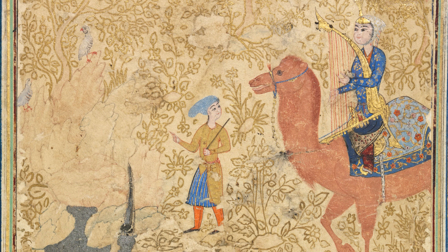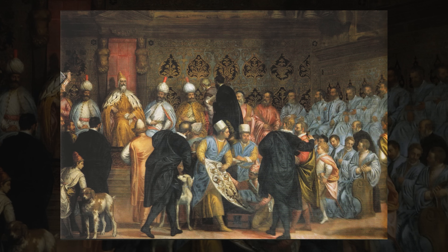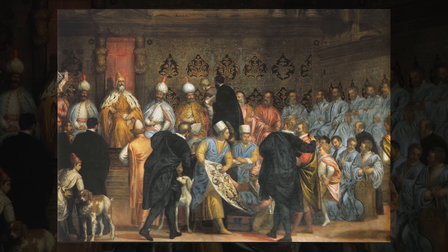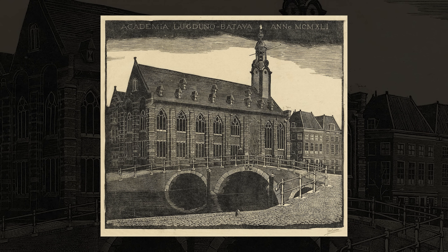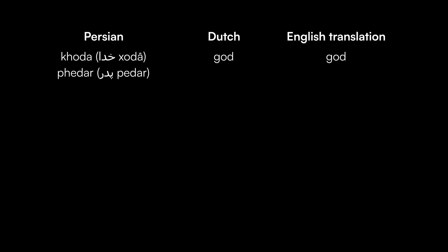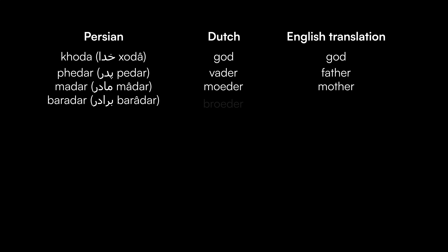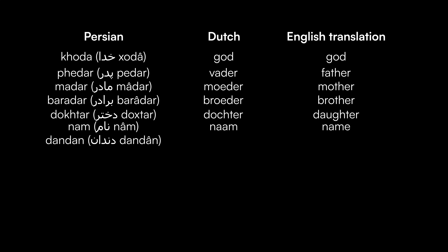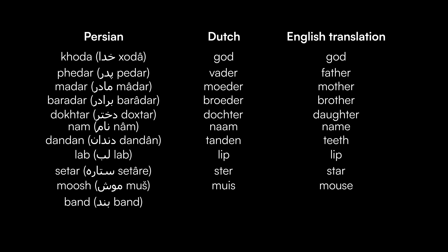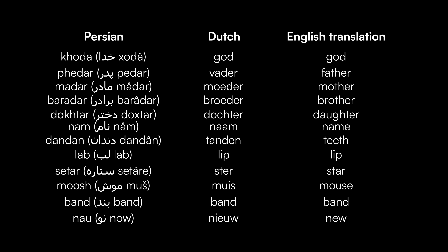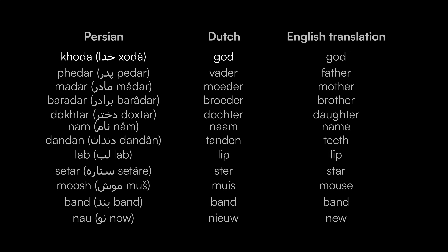During the Renaissance, Europeans rediscovered Persia and its language, but many scholars noticed similarities between Persian and Germanic languages, leading to the Persian-German theory. Paulus Merola, a professor at Leiden University, supposedly drew up a list of Dutch and Persian words. Note that some entries on this list are false cognates, as they actually come from different roots.